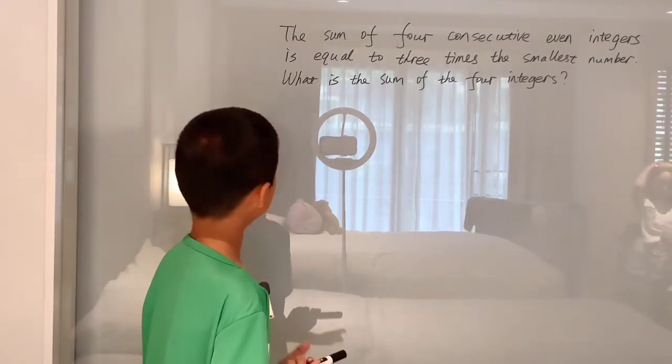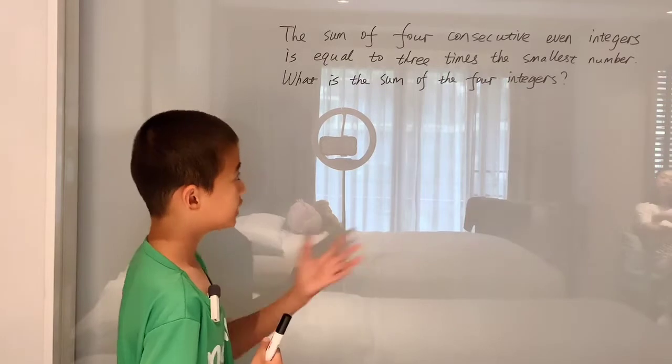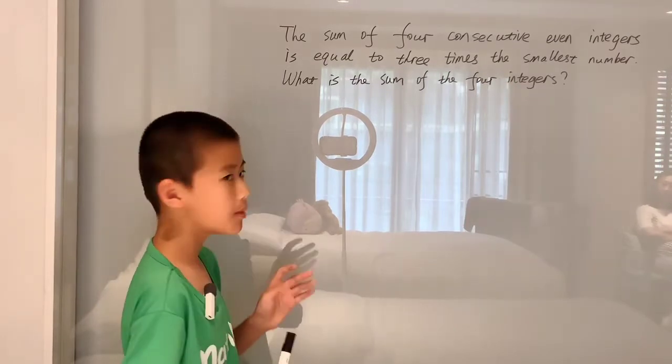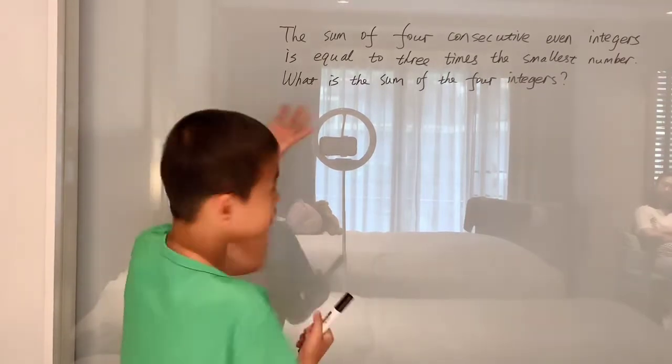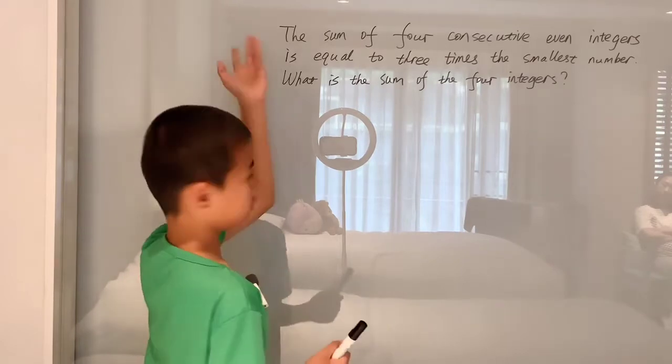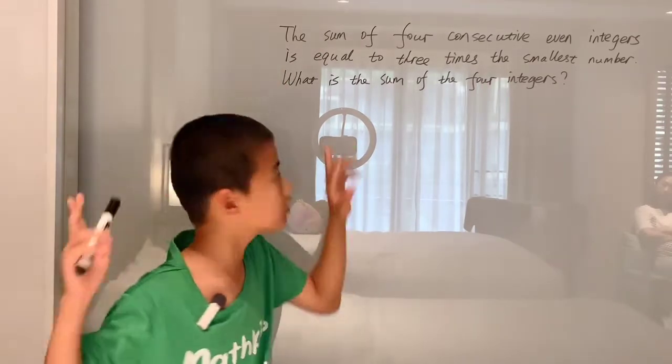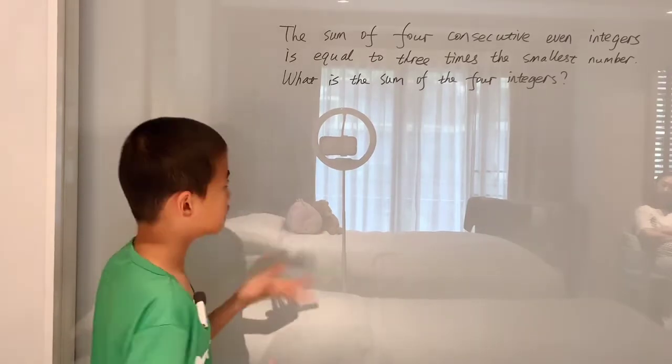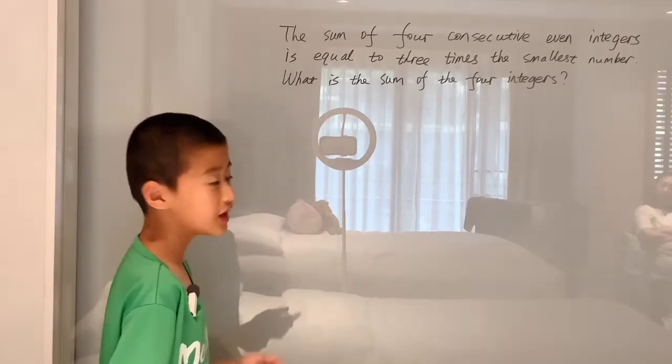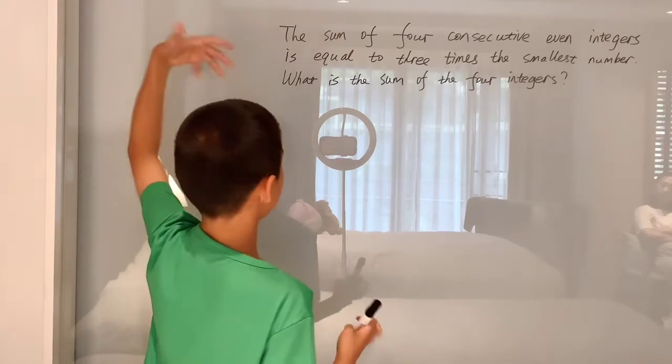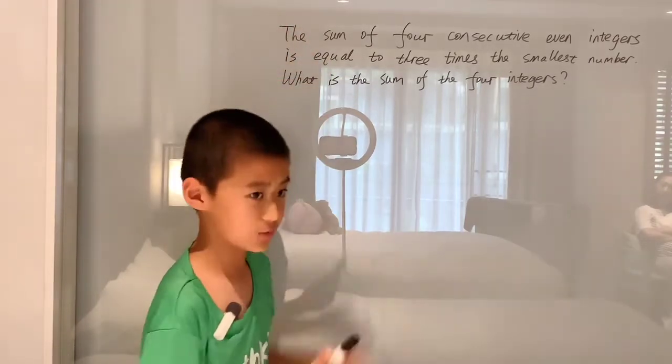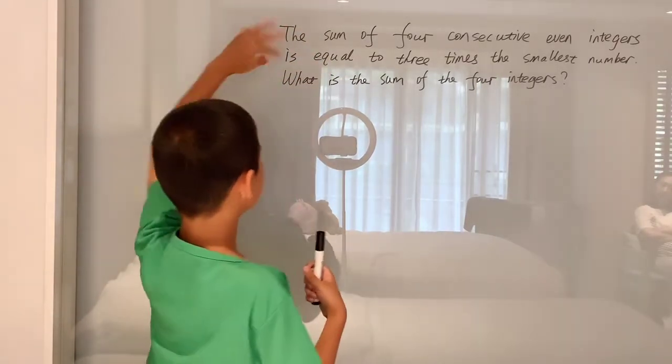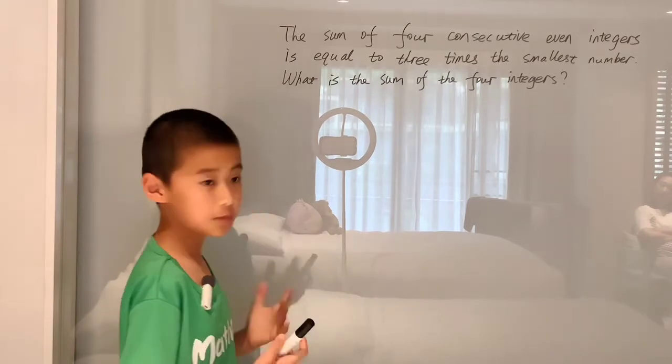The sum of four consecutive even integers is equal to three times the smallest number. What is the sum of our four integers? This is a word problem, and even though it's only three lines long, it's still too many words for us to comprehend. Since we can't work with all these words, we have to turn them into something we can understand.